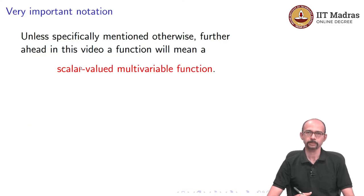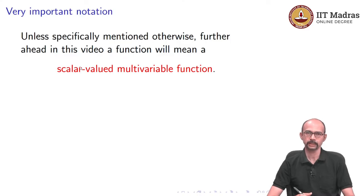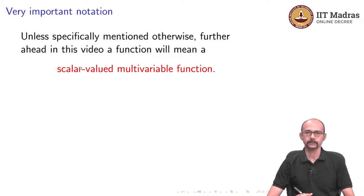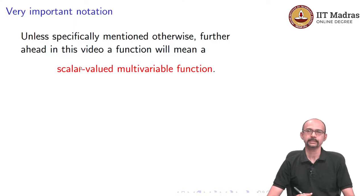Let us fix some notation before we go ahead. From here on, in this video and possibly in several of the next videos — unless specifically mentioned otherwise — a function will mean a scalar-valued multivariable function. Scalar-valued multivariable functions are those where the domain is in ℝⁿ with n greater than 1, and the range is in ℝ; that is, the co-domain is ℝ.